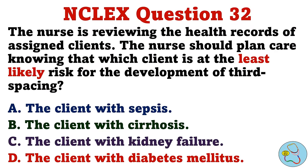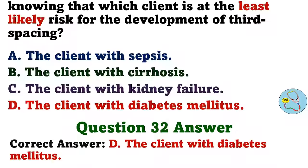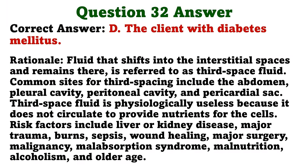The nurse is reviewing the health records of assigned clients. The nurse should plan care knowing that which client is at the least likely risk for the development of third spacing? A. The client with sepsis. B. The client with cirrhosis. C. The client with kidney failure. D. The client with diabetes mellitus. The correct answer is D: the client with diabetes mellitus. Fluid that shifts into the interstitial spaces and remains there is referred to as third space fluid. Common sites for third spacing include the abdomen, pleural cavity, peritoneal cavity, and pericardial sac. Third space fluid is physiologically useless because it does not circulate to provide nutrients for the cells. Risk factors include liver or kidney disease, major trauma, burns, sepsis, wound healing, major surgery, malignancy, malabsorption syndrome, malnutrition, alcoholism, and older age.